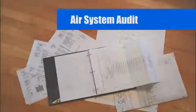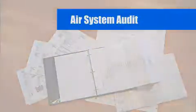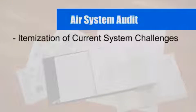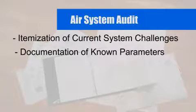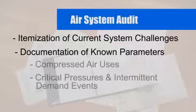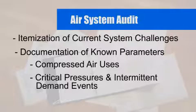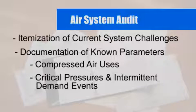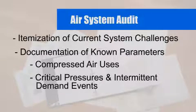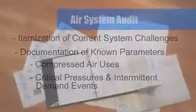The air system audit includes the itemization of challenges, documentation of known parameters including compressed air uses, critical pressures, and intermittent demand events. This is followed by data collection, which includes installation of the monitoring equipment, recorder setup, and data retrieval.